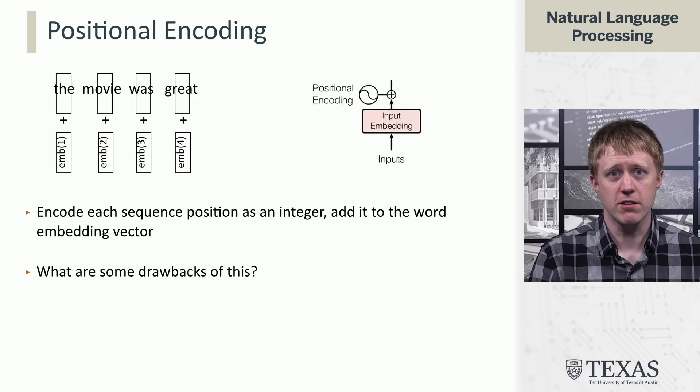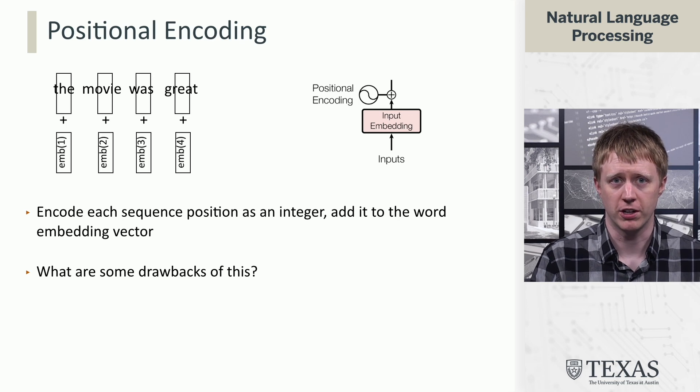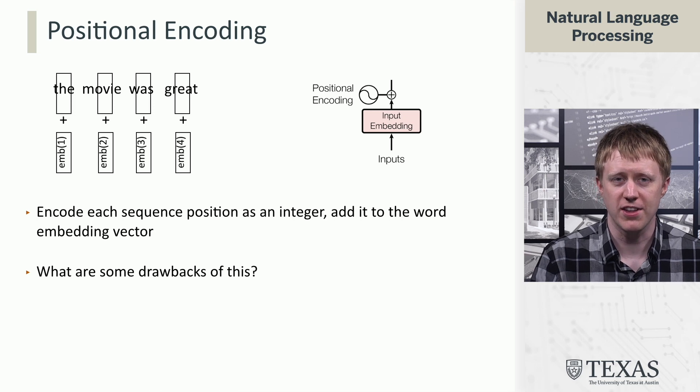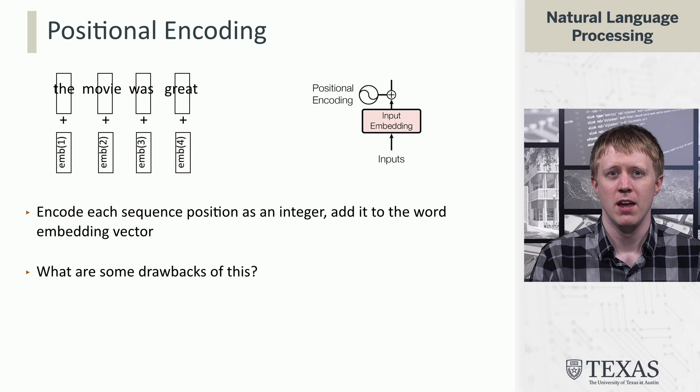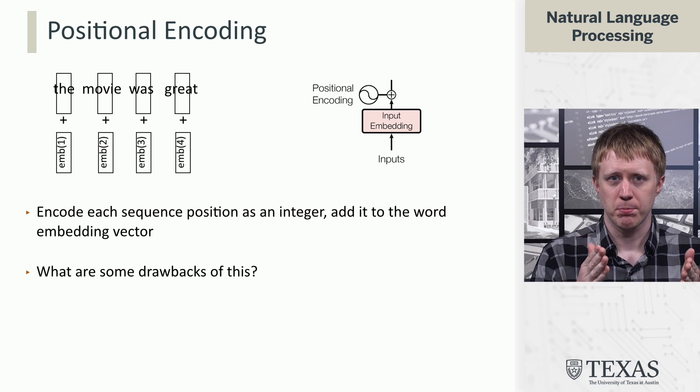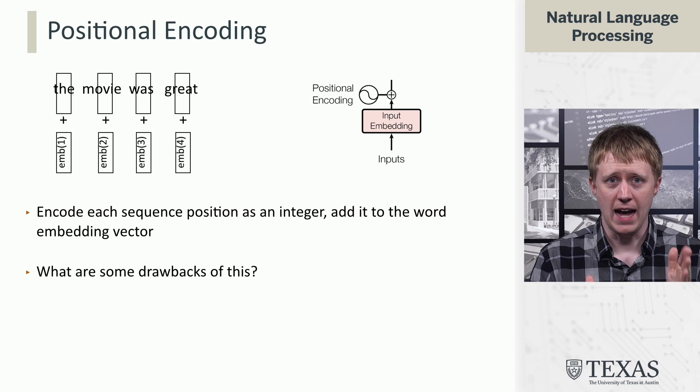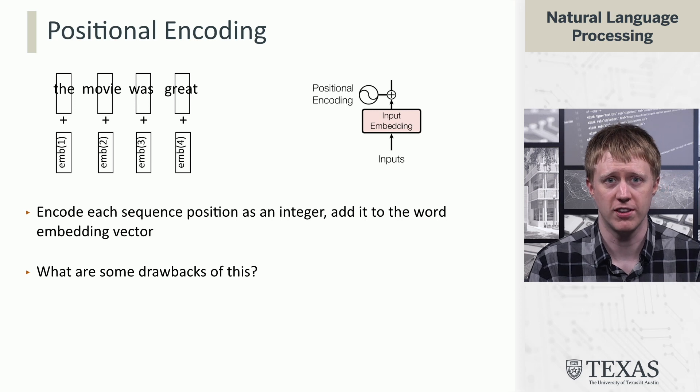All right, so here's the most basic version of this called absolute positional encodings. And it's in some sense almost so simple that it's counterintuitive. What you do is you take the embeddings of each of your words and you add to them a separate embedding of an integer that represents that word's position in the sequence.